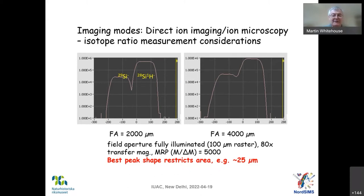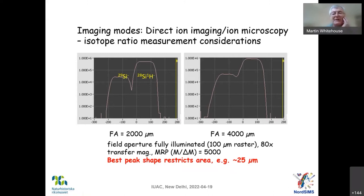Here's an example: this is silicon-29 sitting on the low mass side of silicon-28 hydride, at a mass resolution of about 5000 (mass over delta M). You can see a very nice peak flat on the instrument, which would be perfect for measuring isotope ratios. But we can only really do this when we image an area of about 25 to 30 micrometers. If we try to transport a bigger image through the instrument, we start losing the peak flat, and we can no longer measure precise and accurate isotope ratios.